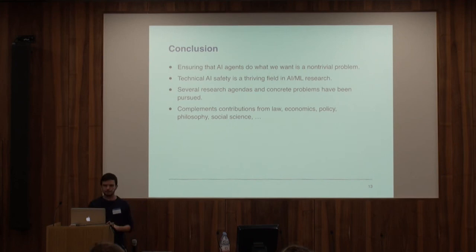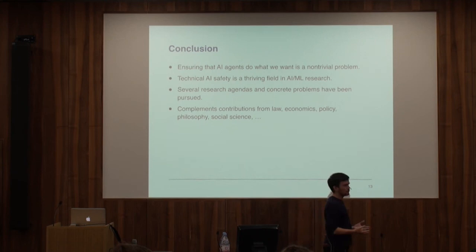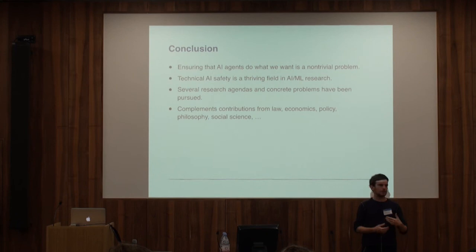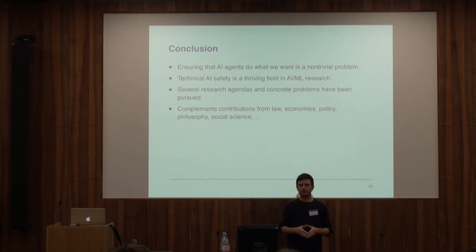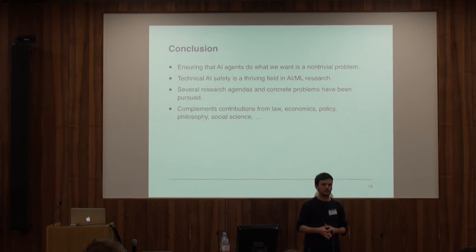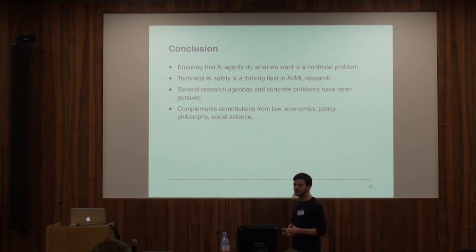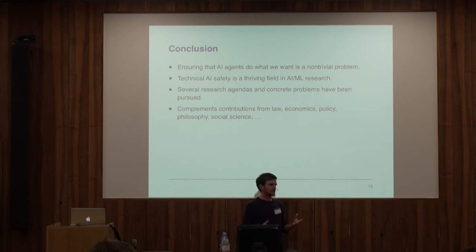To sum up: the basic problem is that ensuring AI agents actually do what we want them to do — so we can be sure deploying them will have beneficial consequences — is a non-trivial problem. We can already see this today in simple environments such as video games, and it may become increasingly problematic as we deploy more complex systems in the real world. There are specific technical problems we can tackle, and people from both top industry labs and top academic groups are already working on them — as one part of a larger effort that also includes contributions from economics, social science, and other fields.